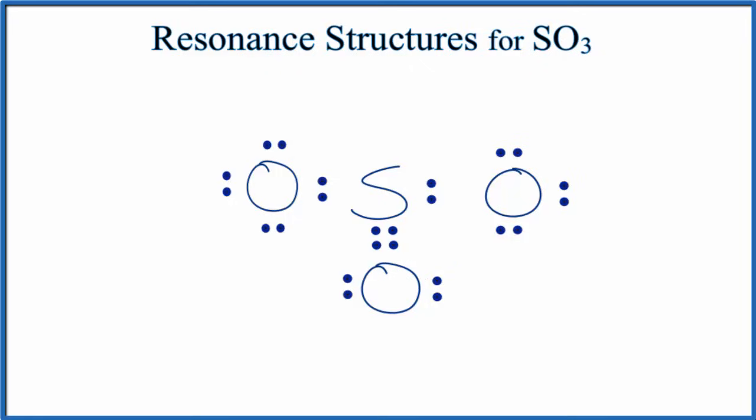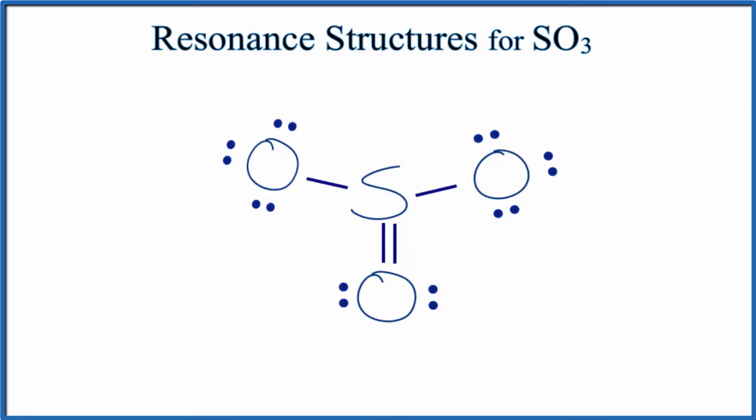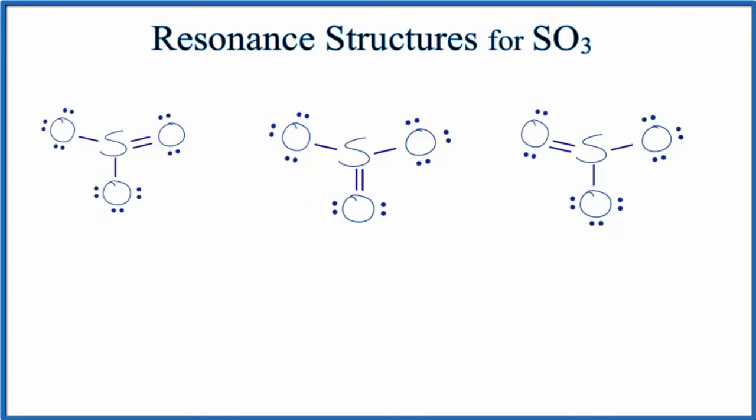Let's replace each bond with a single line and it would have a trigonal planar molecular geometry. Let's put all three of those resonance structures for SO3 up on the screen. Then we add this notation to show that these are resonance structures.